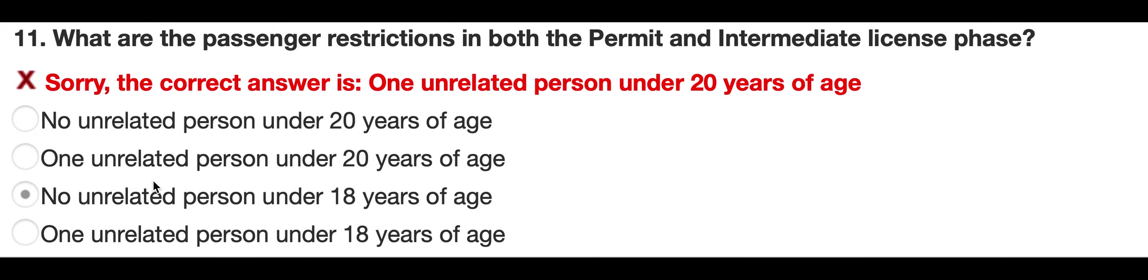Number 11, what are the passenger restrictions in both the permanent and intermediate license phase? I selected no unrelated person under 18 years of age. That is incorrect. The correct answer is one unrelated person under 20 years of age.